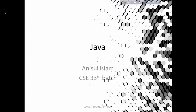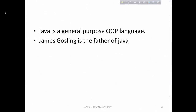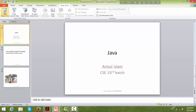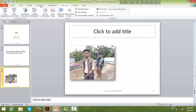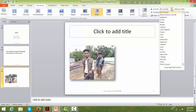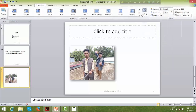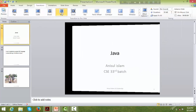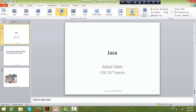Start the slide show from the beginning to preview the transition. You can see the transition effect as the slides change. You can change the transition to a different one — for example, a window transition. Change the transition and apply it to all slides again.